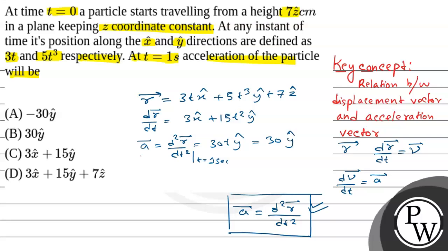So acceleration vector will be along ŷ direction and it is 30ŷ. So our option B is the correct option. The acceleration at time t equals 1 of the particle will be 30ŷ. Hope you understand it. Best of luck.